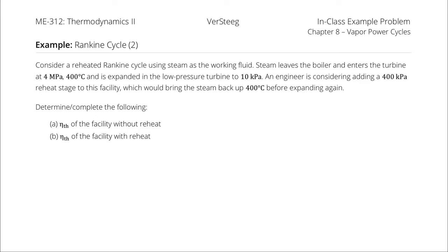Consider a reheated Rankine cycle using steam as the working fluid. Steam leaves the boiler and enters the turbine at 4 megapascals and 400 degrees Celsius, and is expanded to 10 kilopascals. An engineer is considering adding a 400 kilopascal reheat stage, which would bring the steam back up to 400 degrees Celsius before expanding again. We want to determine the thermal efficiency both with and without the reheat stage — essentially analyzing two different Rankine cycles.